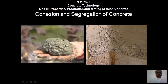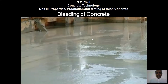For cohesion, we prepare a small ball of concrete so that the cohesion property can be observed. Segregation means the separation of material from the concrete — you can see the separation of material occurring here, which is due to segregation of the concrete.